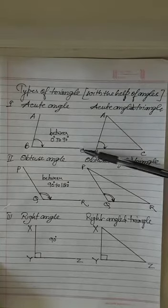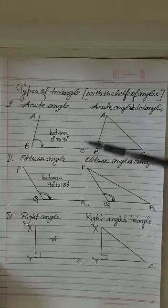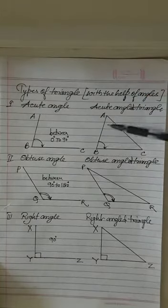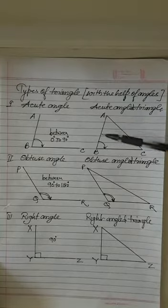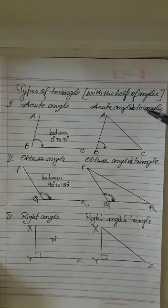So I made ABC acute angle. When I joined AC it is becoming triangle ABC. And because it is made by the acute angle. So it is known as acute angled triangle.